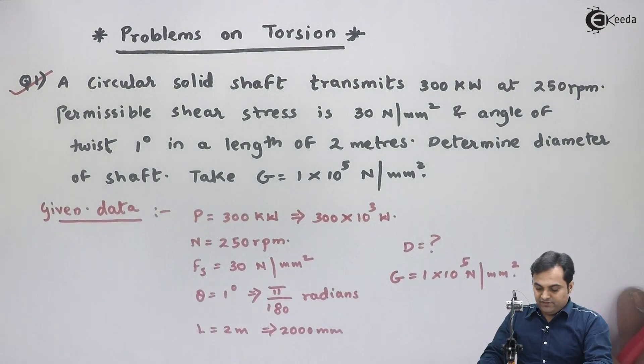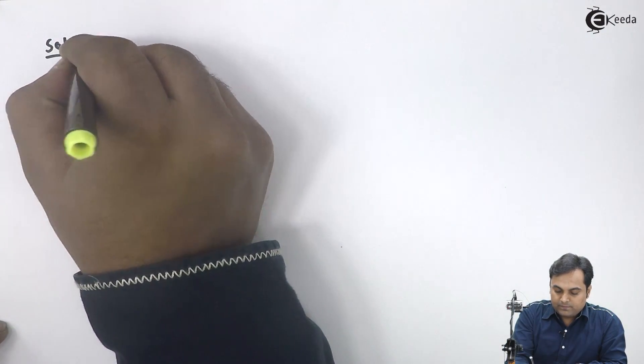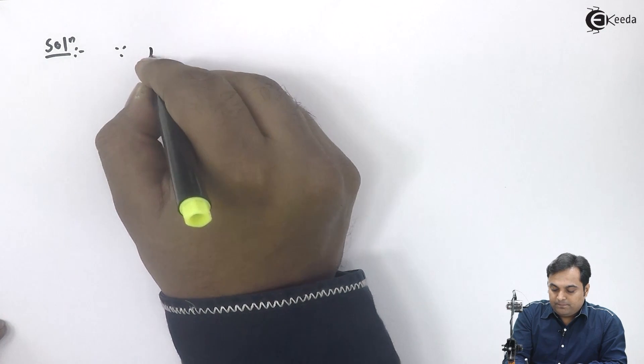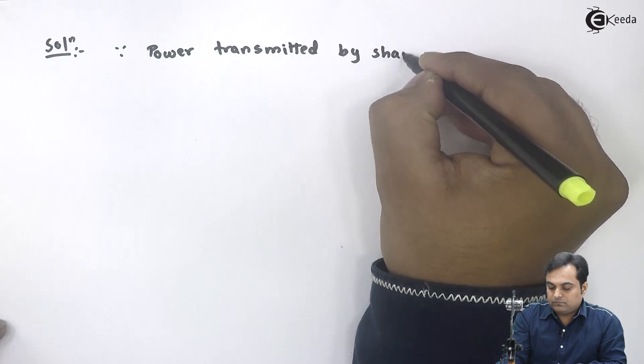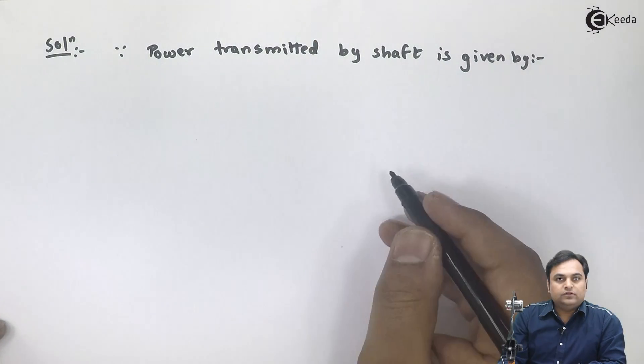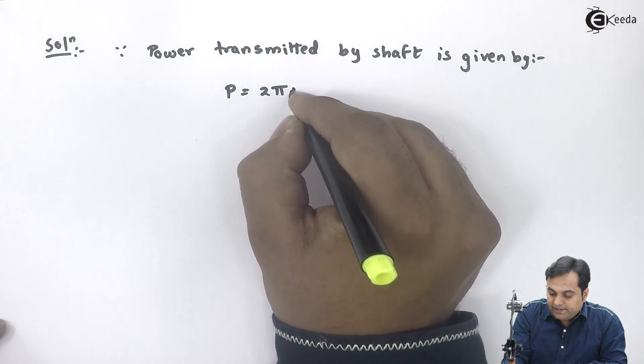Since power is given in this question, I will use the power formula to find the torque value first. The formula for power transmitted by a shaft is P = 2πNT/60.